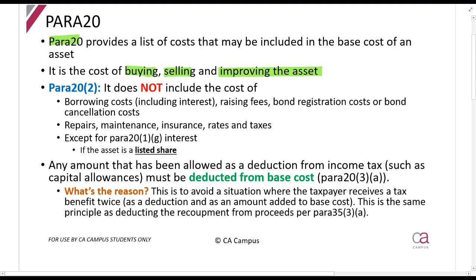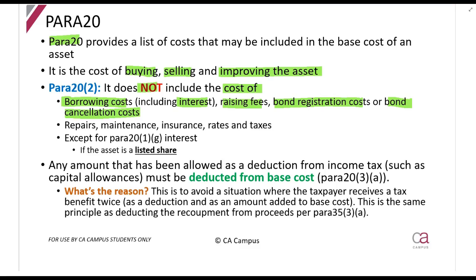The following is not included in the base cost — so when you see these items in a scenario or question, understand that you cannot include them. Borrowing costs: things like interest, raising fees, bond registration costs, or bond cancellation costs. Raising fees are the cost of raising debt. The cost of registering a bond or cancelling a bond when you're selling an asset — none of those costs may be included in the base cost.